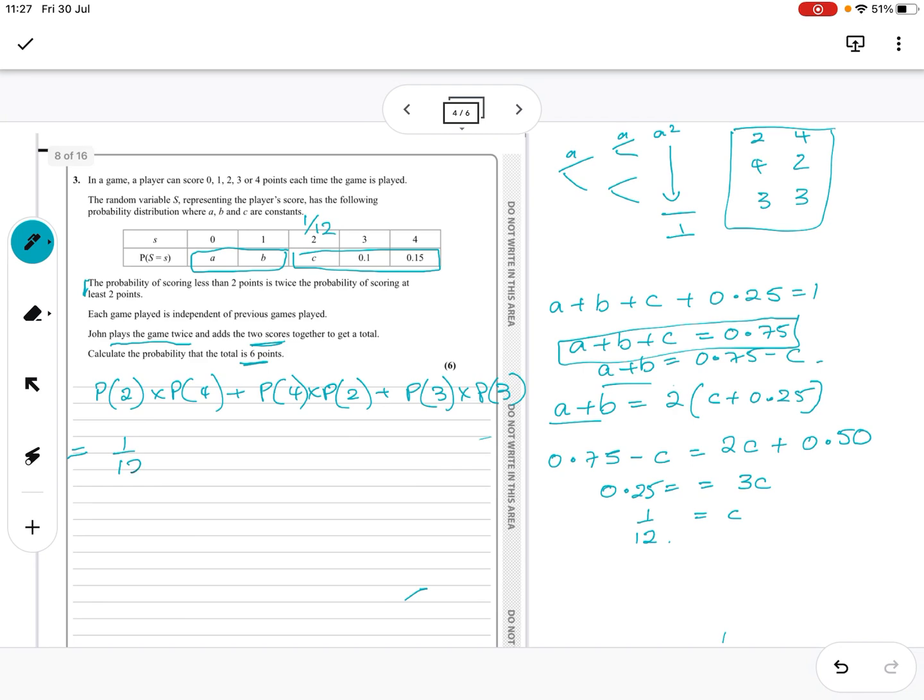So I've got a twelfth times 0.15 plus 0.15, so I've basically got that twice. And I've got 0.1 times 0.1. Let's put that in the calculator. 1 twelfth times 0.15 times 2 plus 0.1 times 0.1 is 0.01, so that gives us 0.035.